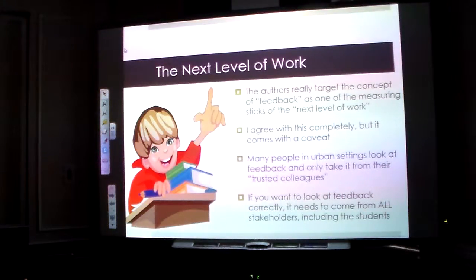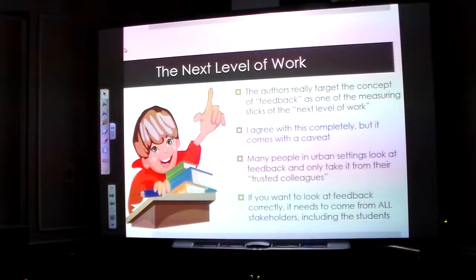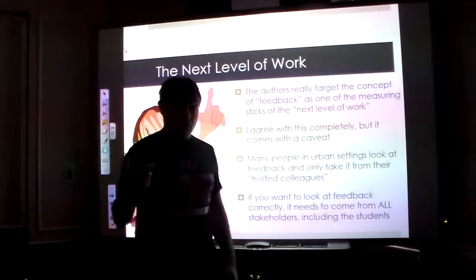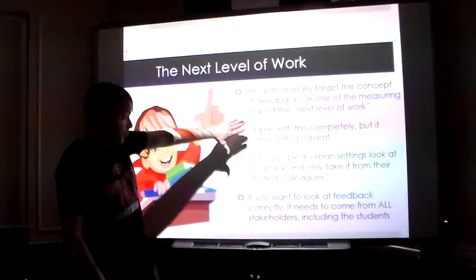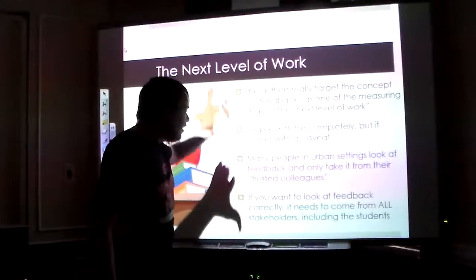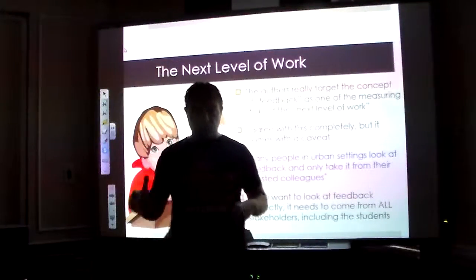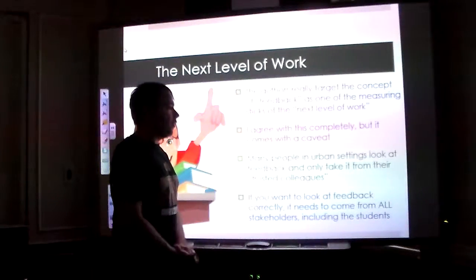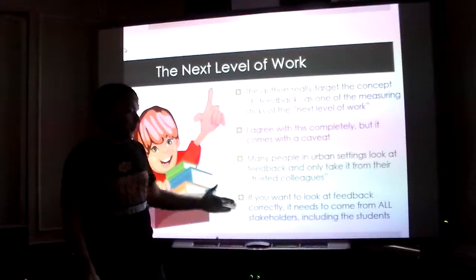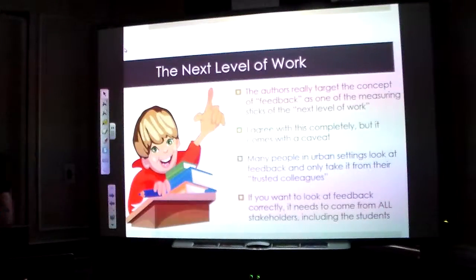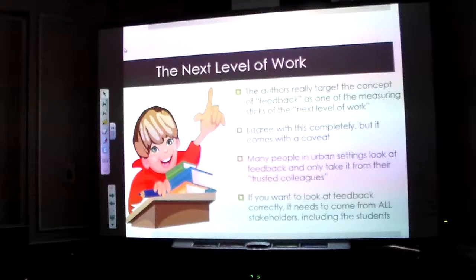The authors really mention feedback is measuring the next level of work. The problem with feedback is it has to be constant and it has to come from a lot of different people. We're going to talk about the idea of total quality management and 360 feedback because our problem with schools is many people in urban settings or larger school districts will only take feedback from the people they trust because there's so much tumultuous nature and fear that people have in these settings that they only want feedback from people they trust. That can be a problem as well. It has to come from all stakeholders, including the students, and that's why I'm a big believer in multi-client feedback in education. When a system does it correctly, it's probably the most effective way that it can work.